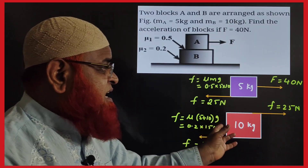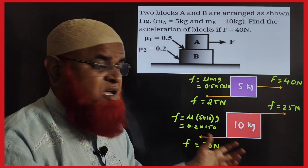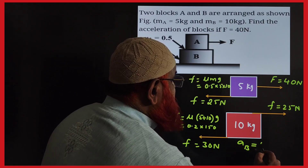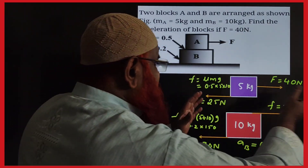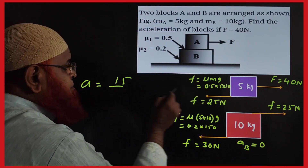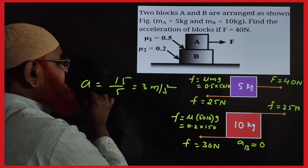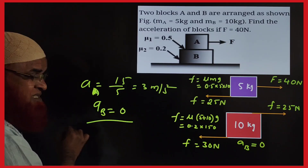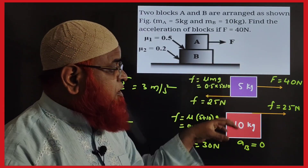The coefficient of friction below is 0.2, so the limiting friction for the lower block is 30 N. Since the driving friction of 25 N is less than the backward friction of 30 N acting on the lower block, the acceleration of the lower block B is zero. The acceleration of the upper block is the resultant force: 40 minus 25 equals 15, divided by mass 5 kg, giving 3 meters per second squared. Lower block acceleration remains 0 because the backward friction exceeds the driving friction.